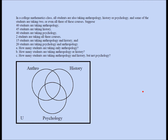A three-set Venn diagram splits your universe into eight disjoint regions. One region contains people who haven't taken any of the three courses. One region contains people taking all three courses. Others represent: anthropology and history but not psychology; history and psychology but not anthropology; anthropology and psychology but not history; only anthropology; only history; and only psychology. These are things you absolutely have to understand.